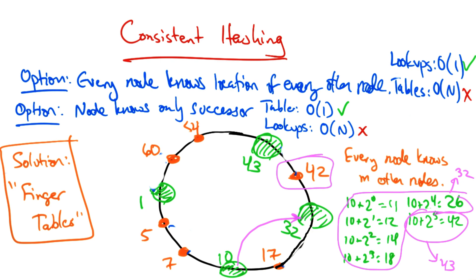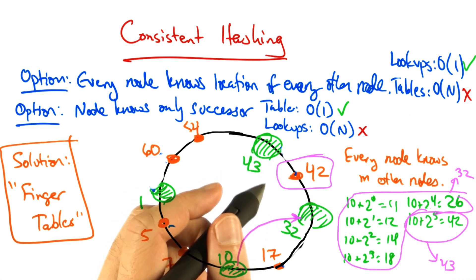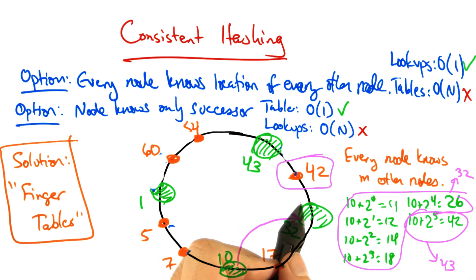At this point, we can move forward around the ring, looking for the node whose successor's ID is bigger than the ID of the data, which in this case is node 43.